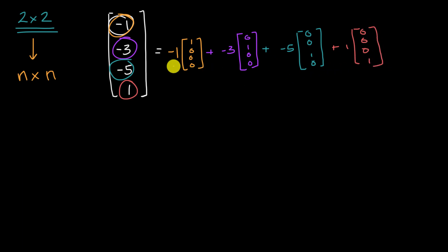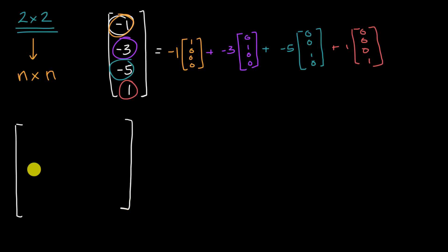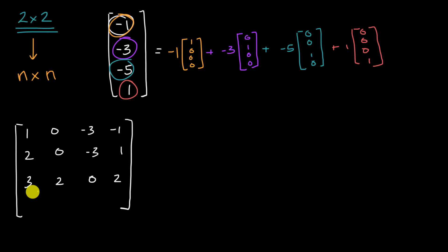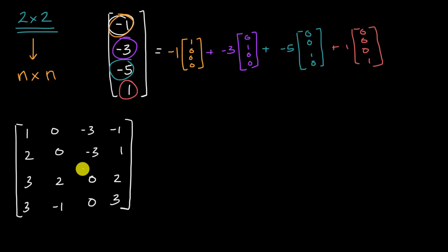When I write it this way, you might immediately start realizing how to do transformations here. If I were to give you the transformation matrix — and this would be a transformation matrix for four dimensions — it's going to be a four-by-four matrix. So I'm going to write some random numbers here: 1, 0, -3, -1 / 2, 0, -3, 1 / 3, 2, 0, 2 / 3, -1, 0, 3. My question to you is: what would be the mapping of this four-dimensional vector if we were to apply this transformation to four-dimensional space?